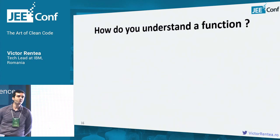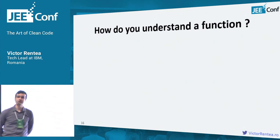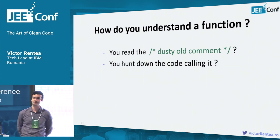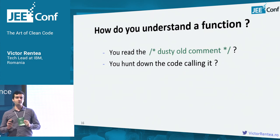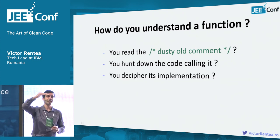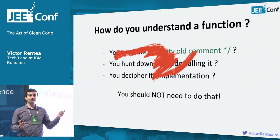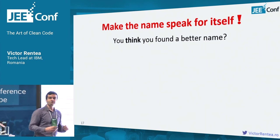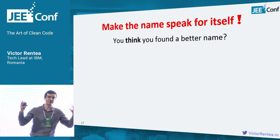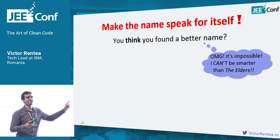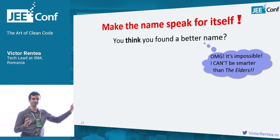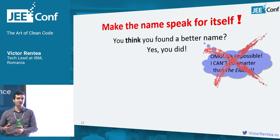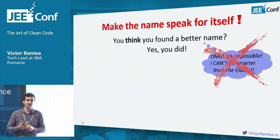How do you understand a function? You could read the comment, look at where it's invoked, or open the implementation and read it line by line. You shouldn't need to do any of these — the name should tell everything that function does. The very name should tell the intention. Sometimes in legacy code you think you found a better name for a class or function. That's not nonsense — you learn better names as you implement. Take advantage of that feeling and refactor. It takes seconds with an IDE and rarely fails.